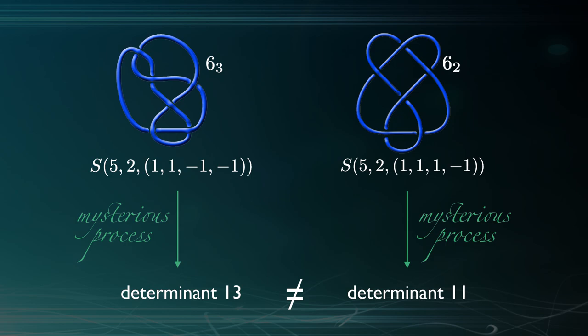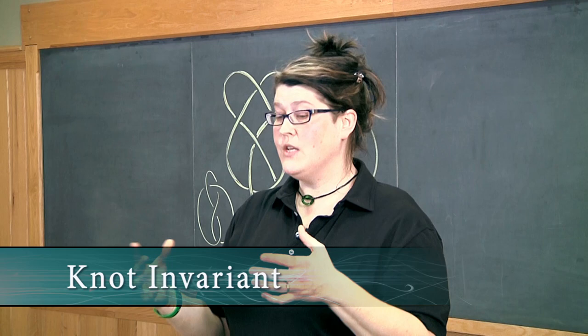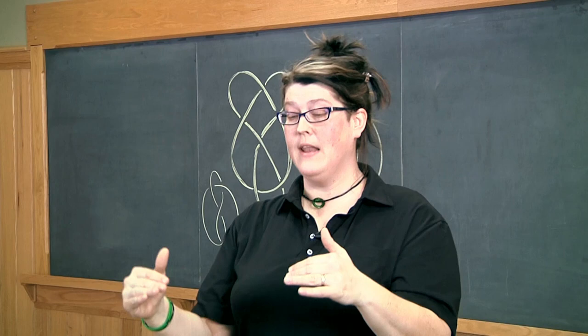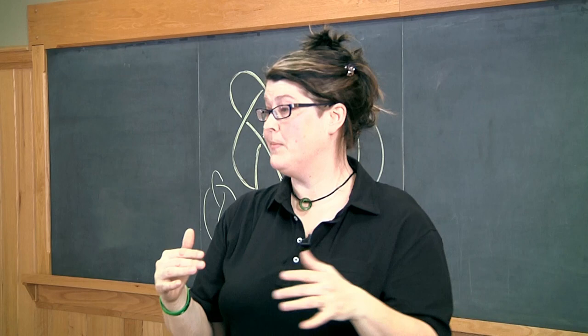It turns out that one of those determinants is 11 and the other is 13. The determinant is what's called a knot invariant. Since I got different determinants, I know for a fact they were different knots. If I got 11 and 11, I would not have known they were necessarily different. But if you get two different things, you know you have two different knots.